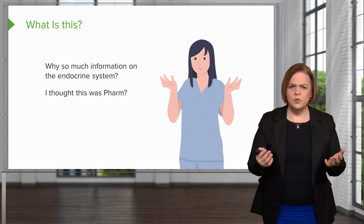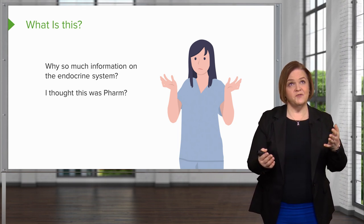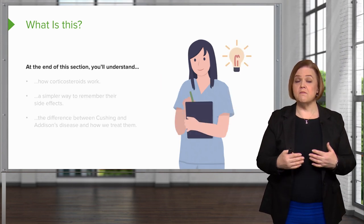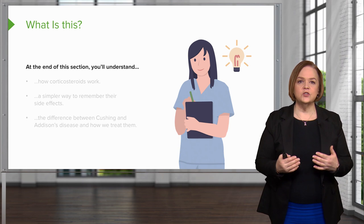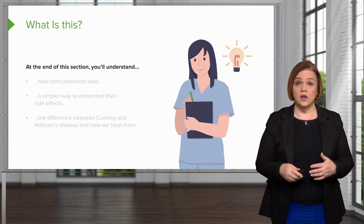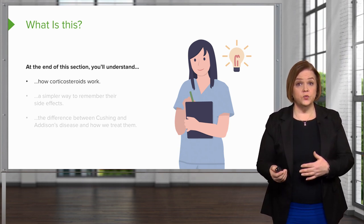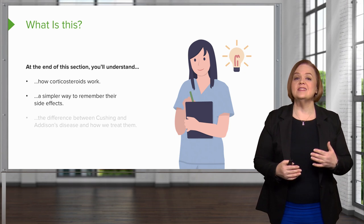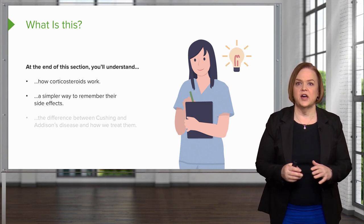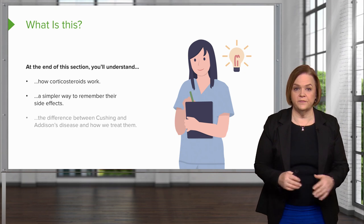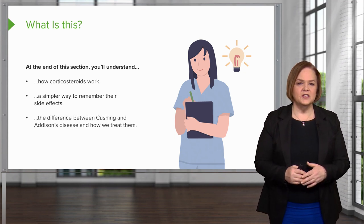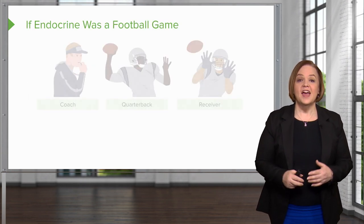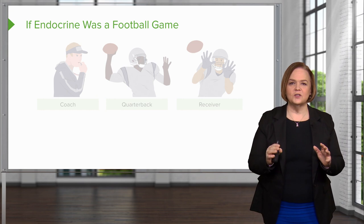You might be wondering why we're doing so much information on the endocrine system when this is pharmacology. Trust me — what we're doing with these medications is kind of mimicking what your body naturally does. At the end of this section, you'll understand how corticosteroids work in the body, both the ones your body makes and the ones we give you. I'll also help you learn a simpler way to remember all their side effects, and help you know the difference between Cushing's and Addison's disease and how we treat them. Now let's get down to breaking down corticosteroids.